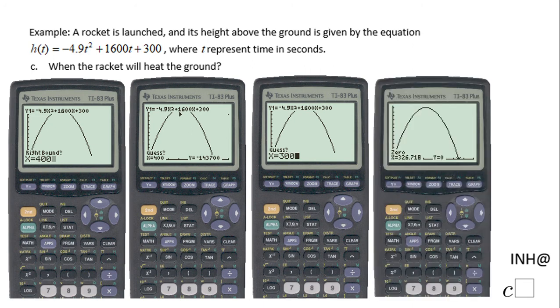And that's it. If you notice, the zero is at X equals 326.718. Remember the X in our problem here stands for time, so the rocket hits the ground after 326.718 seconds.